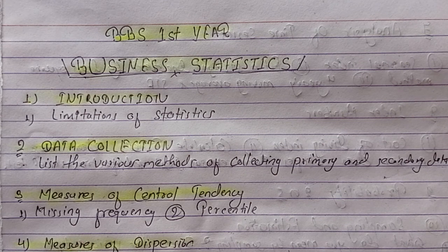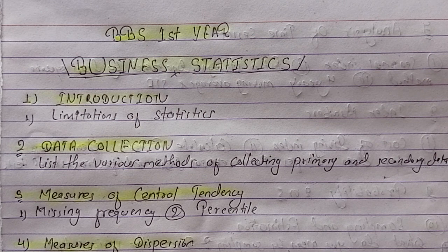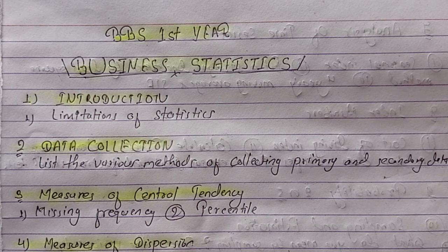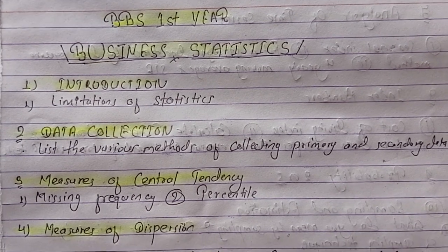I'm going to talk about the primary data and data collection. In secondary data, there are two methods of collecting sources: public sources and unpublished sources. These are the main points. This is the main points of email.